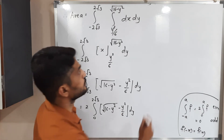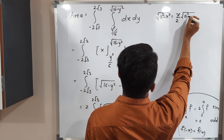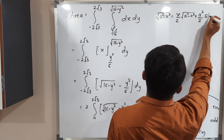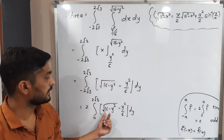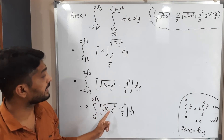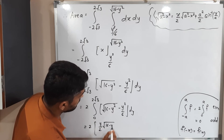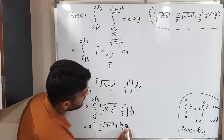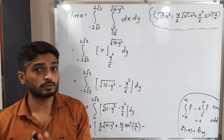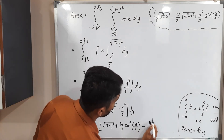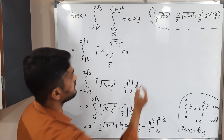There is a standard formula: ∫√(a²-x²) dx = (x/2)√(a²-x²) + (a²/2)sin⁻¹(x/a). Here a² = 16 and x corresponds to y. The integration of -y²/6 is straightforward: -y³/18. So the result is 2[(y/2)√(16-y²) + (16/2)sin⁻¹(y/4) - y³/18] from 0 to 2√3.